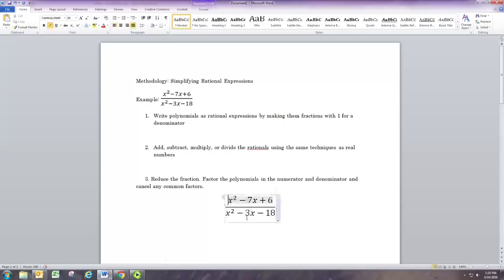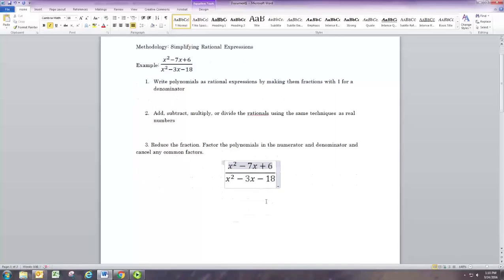Since the leading coefficient is 1, we can do this pretty easily. We need two numbers that multiply to 6 and add to negative 7. And those numbers are, of course, negative 6 and negative 1.